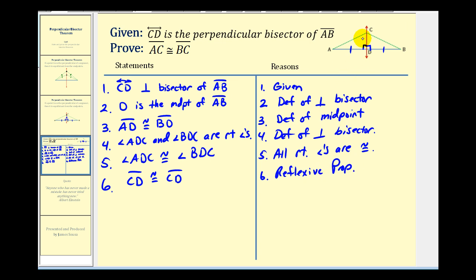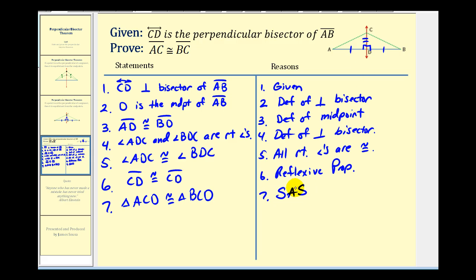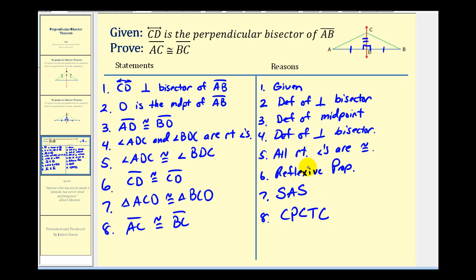Now we have enough information to prove that these two triangles are congruent. Triangle ACD is congruent to triangle BCD by side-angle-side congruence. And now that we have these two triangles congruent, we know that segment AC must be congruent to segment BC, which is what we were trying to prove. The reason for this is that corresponding parts of congruent triangles are also congruent. Since these two segments are congruent, they are the same length, therefore proving the perpendicular bisector theorem.